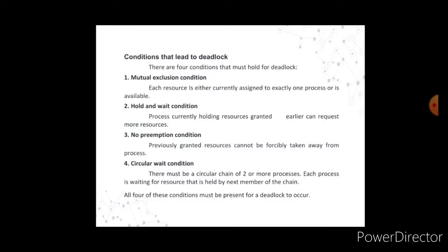There are four conditions that must hold for a deadlock to occur. First, mutual exclusion condition: each resource is either currently assigned to exactly one process or is available. Second, hold and wait condition: a process currently holding resources can request more resources. Third, no preemption condition: previously granted resources cannot be forcibly taken away from a process. Fourth, circular wait condition: there must be a circular chain of two or more processes, each waiting for a resource held by the next member of the chain. All four conditions must be present for a deadlock to occur.